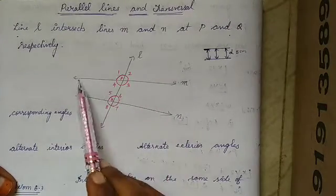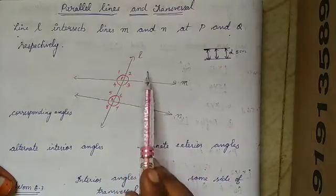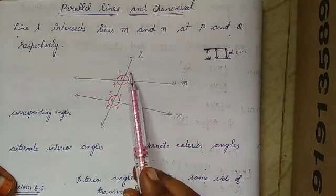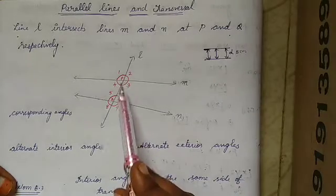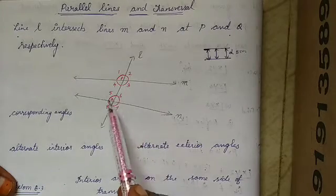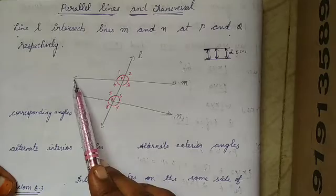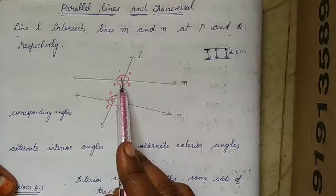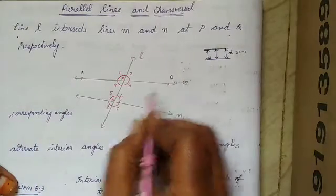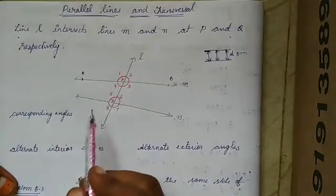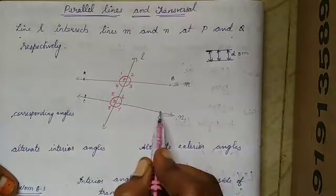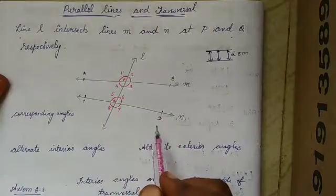What we have learned is the linear pair of angles. If L is a line, then 1 plus 2 is equal to 180 degrees. If M stands on that line, then 2 plus 3 is equal to 180. Similarly, 4 plus 3 is equal to 180 degrees, and 1 plus 4 is equal to 180 degrees. Likewise, we can say the same for line N also.